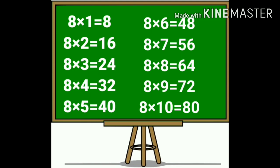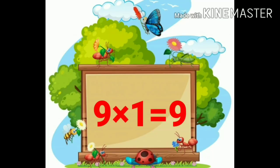Again: eight ones are 8. Eight twos are 16. Eight threes are 24. Eight fours are 32. Eight fives are 40. Eight sixes are 48. Eight sevens are 56. Eight eights are 64. Eight nines are 72. Eight tens are 80.